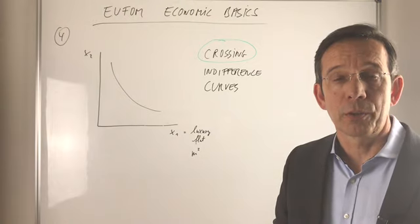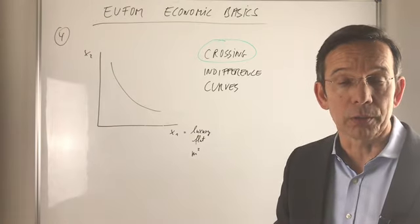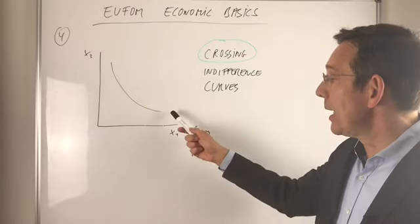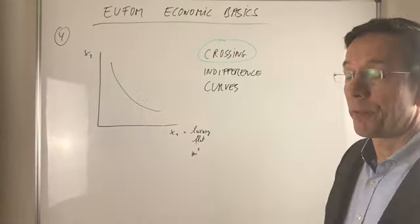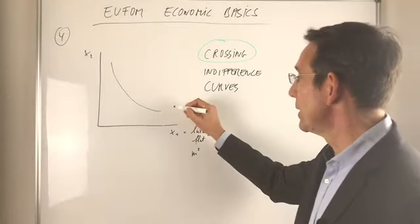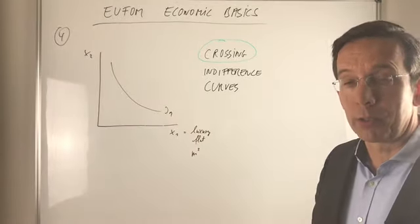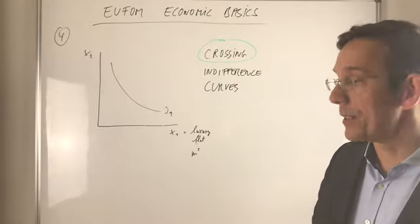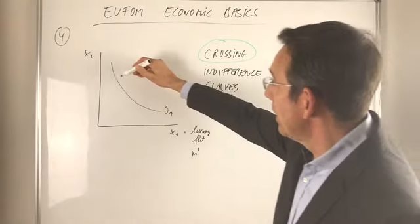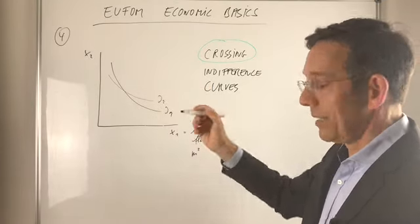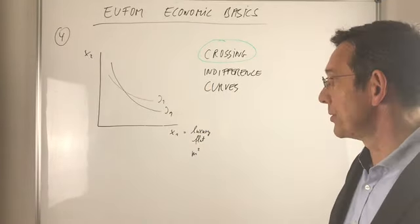Could indifference curves for one household cross? No, that's not possible. You only have one indifference curve for one household. Let's say that's the indifference curve for the household with certain preferences. For the same household, you cannot have another indifference curve that crosses.